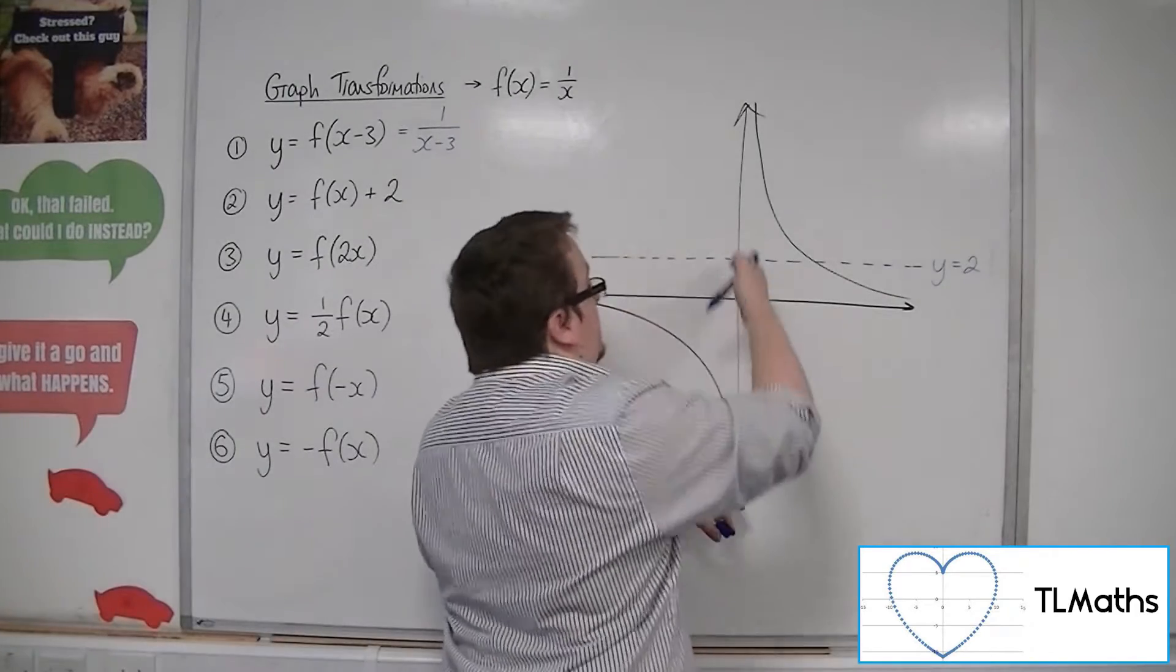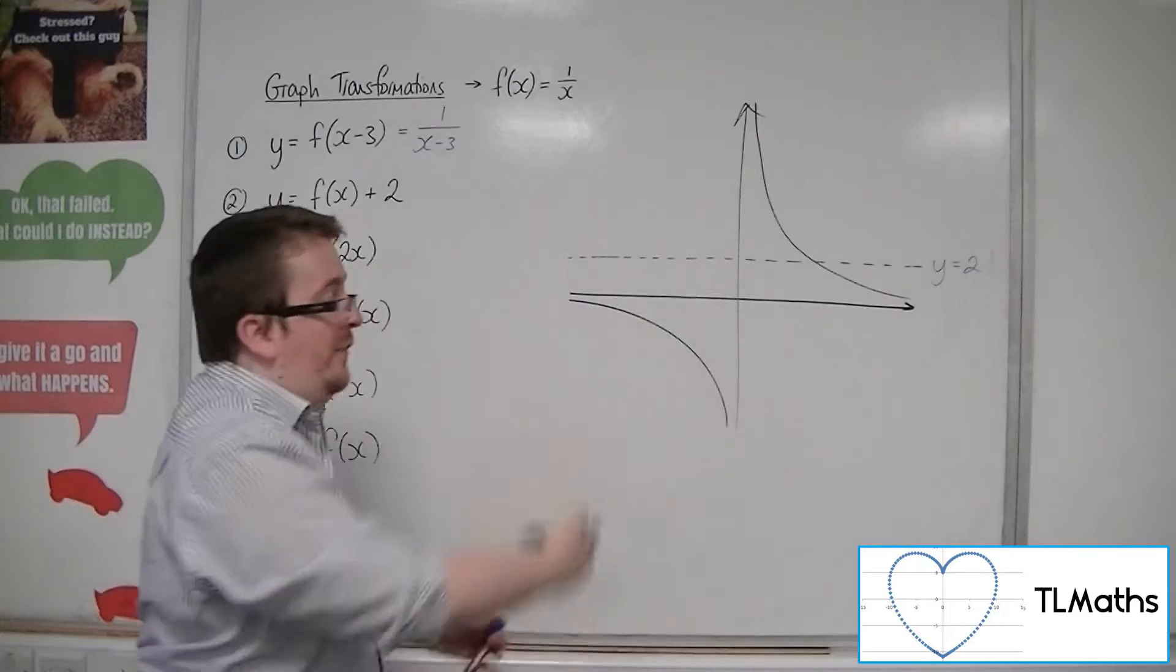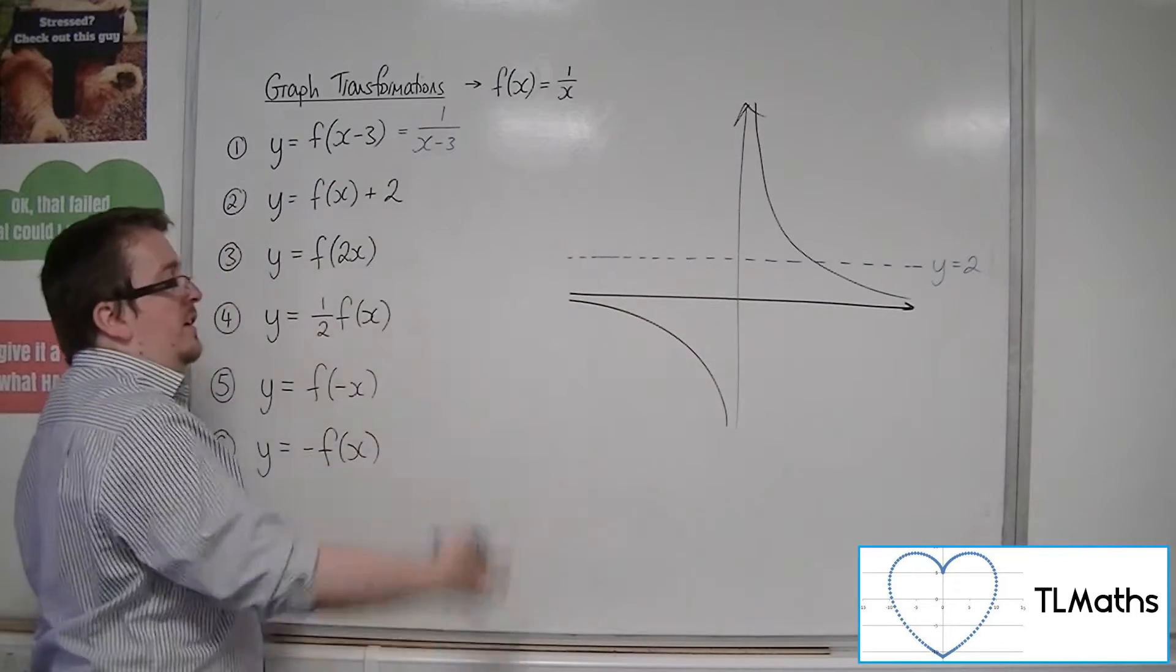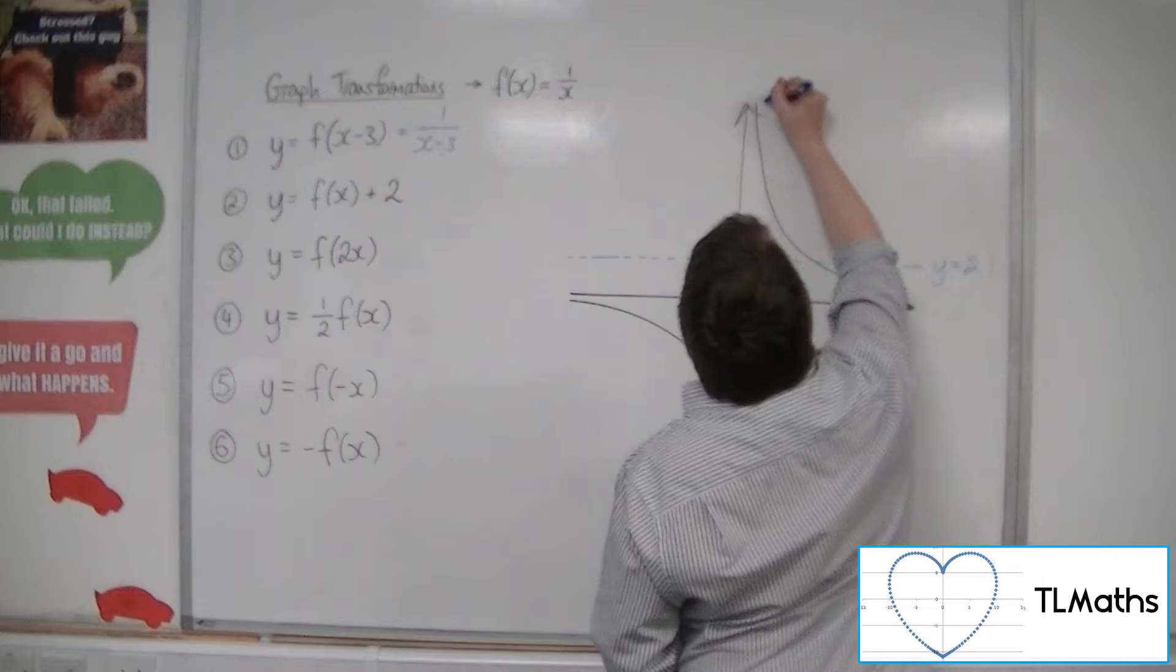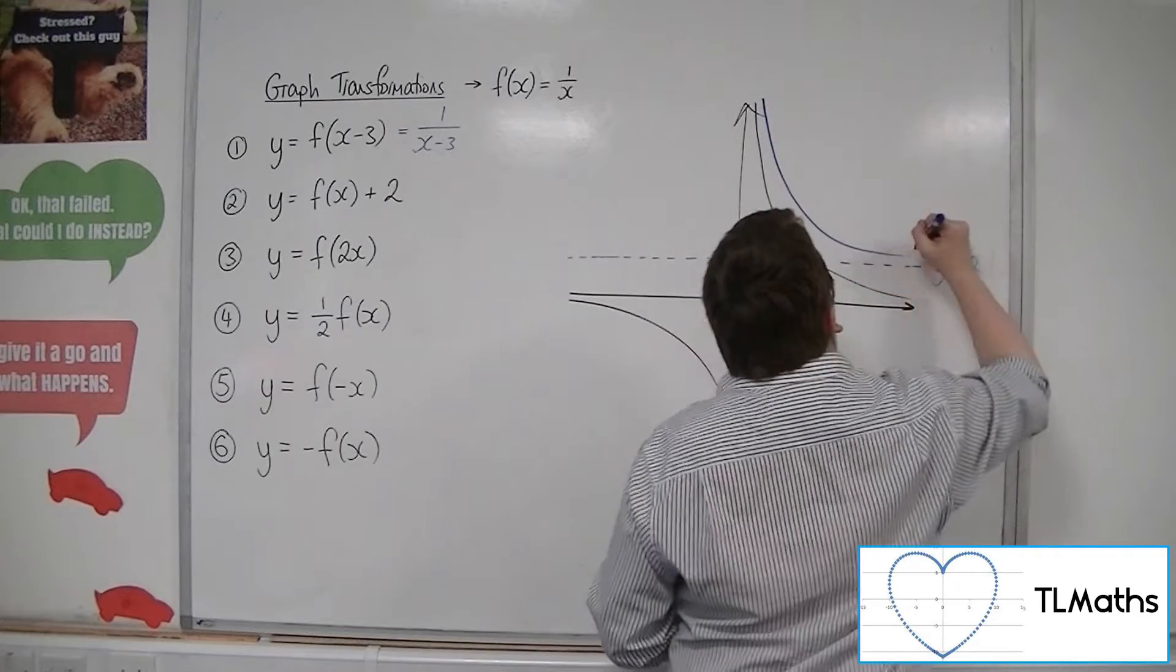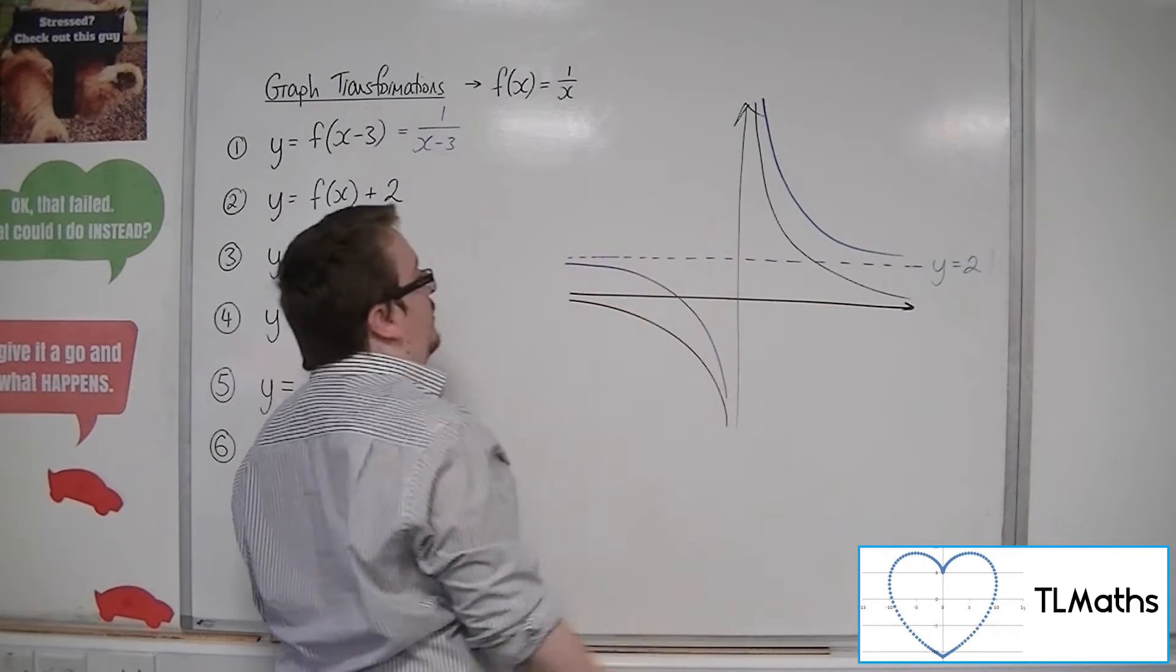Now, the asymptote at x is 0 will stay where it is. Although, that is effectively moving up, but because it's an infinite line, it's as if it's staying still. And so, this curve now looks something like this.